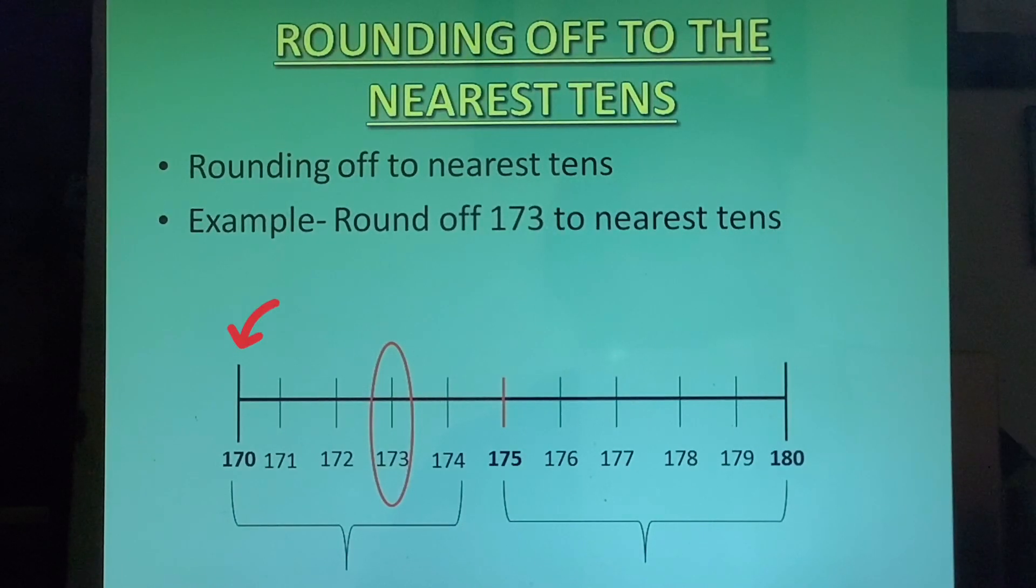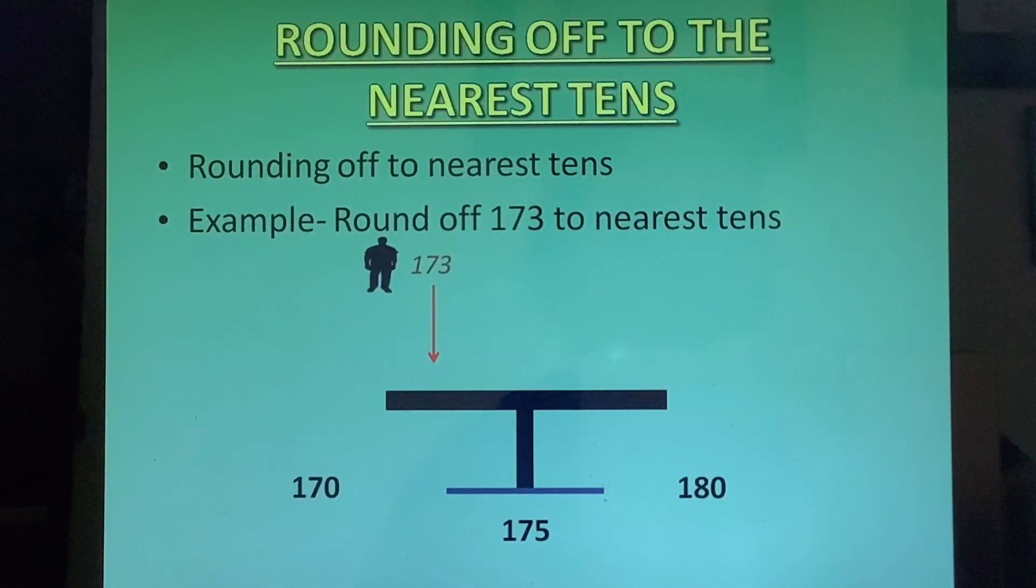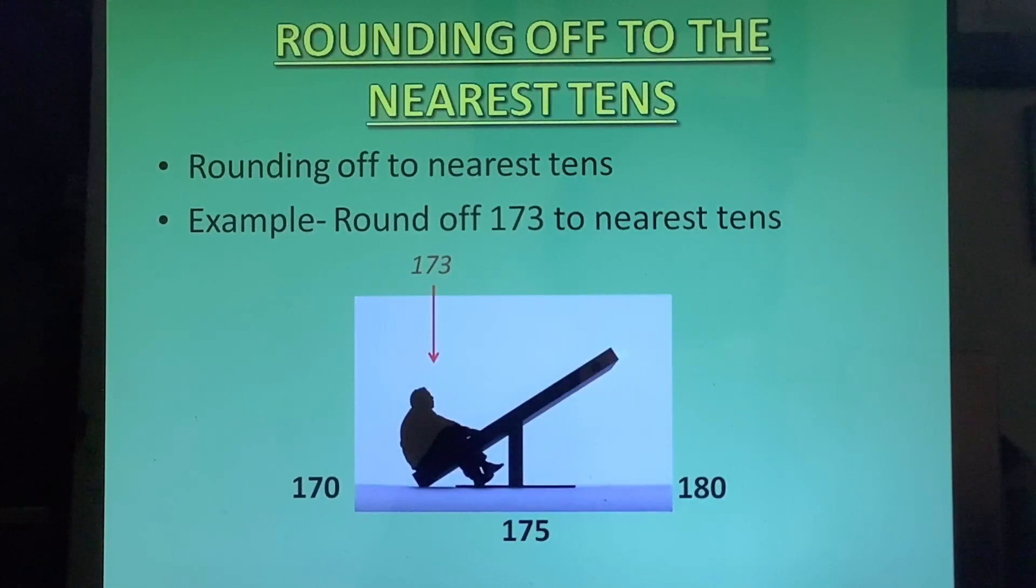Now back to our question. Since we have 173 and it is closer to 170, it will round off to 170. Now same example with the help of a seesaw. 170 at one corner, 175 at the center, 180 at the other corner. Now 173 will lie between 170 and 175. So the person will come and sit on the left side. And when he sits on the left side, he touches the ground where 170 is written. So this number will round off to 170.